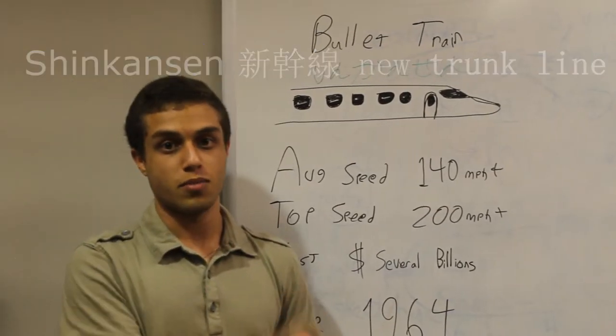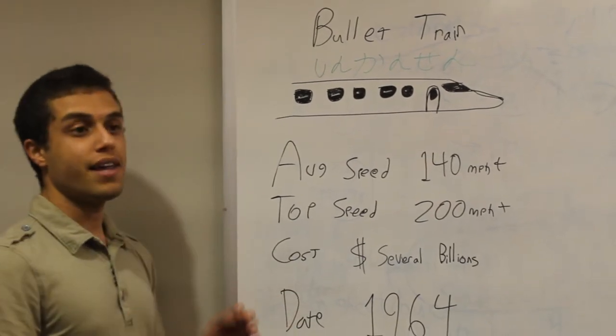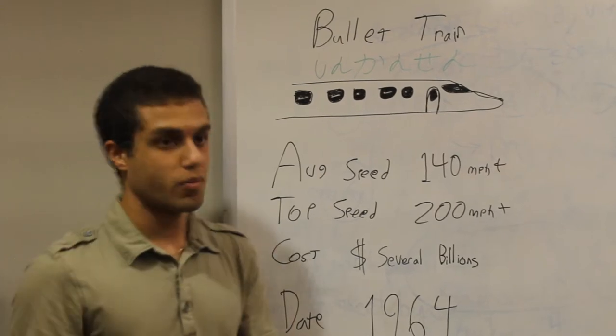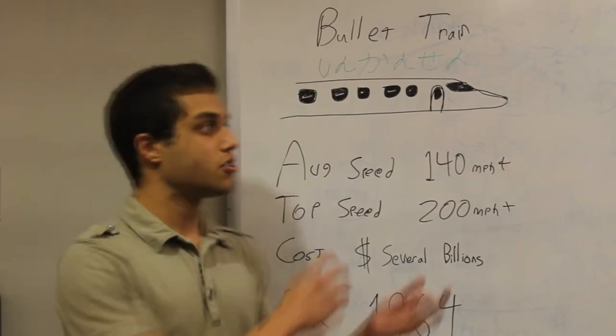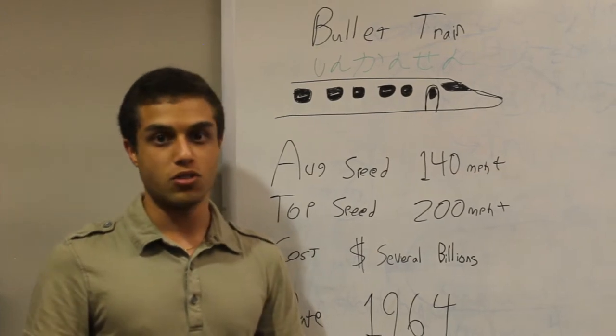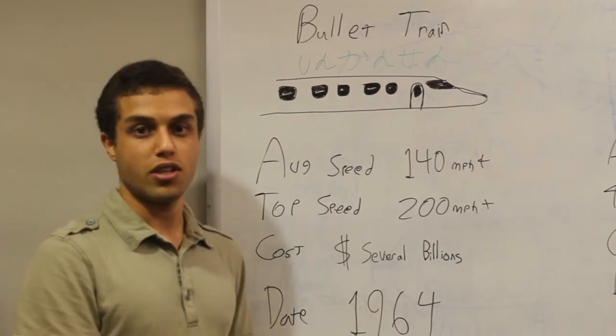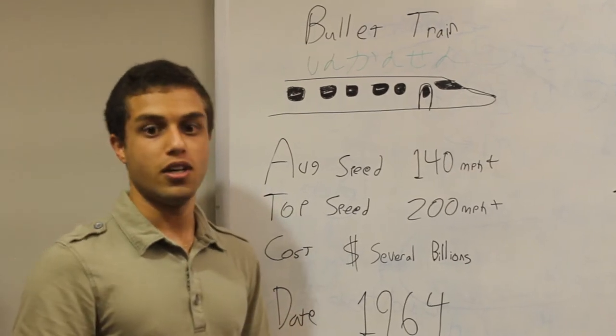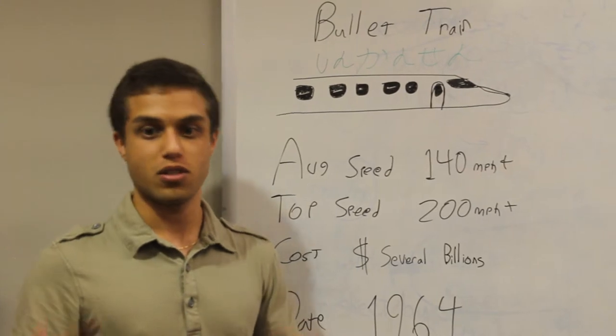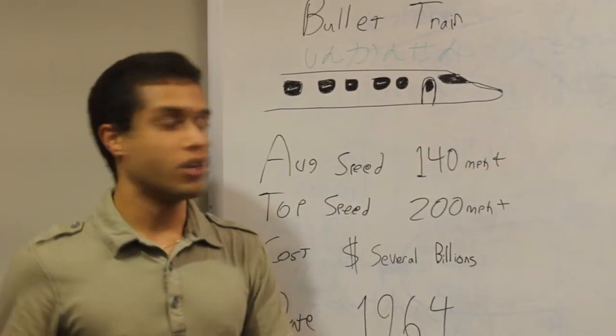A bullet train Shinkansen system was first introduced in 1964. Today they usually have an average speed of 140 miles an hour and a top speed of 200 miles an hour. Their cost is the cheapest out of the three systems at several billion dollars. These trains run on electricity, so they're safe for the environment. They don't kill any trees, except for the trees you have to cut through, but it's still environmentally safe.